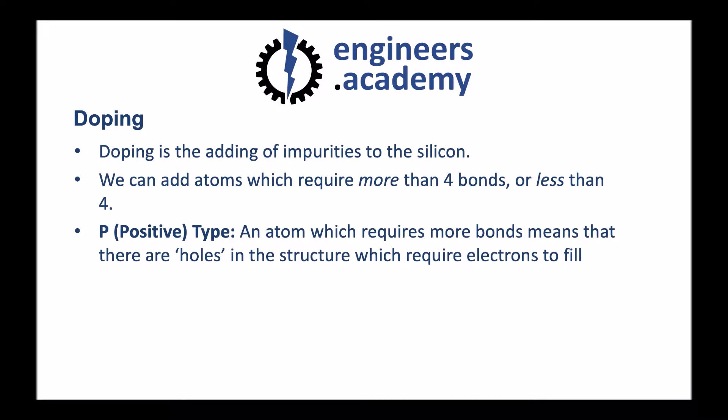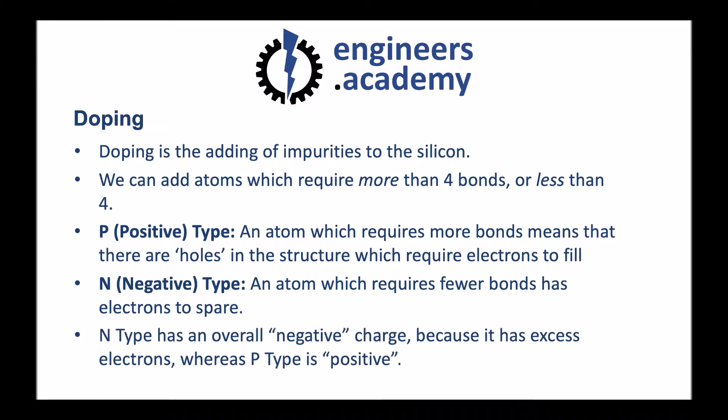A p-type material is an atom which requires more bonds, meaning that there are holes in the structure which require electrons to fill. An n-type is an atom which requires fewer bonds and has electrons to spare. N-type has an overall negative charge because it has excess electrons, whereas p-type is positive.